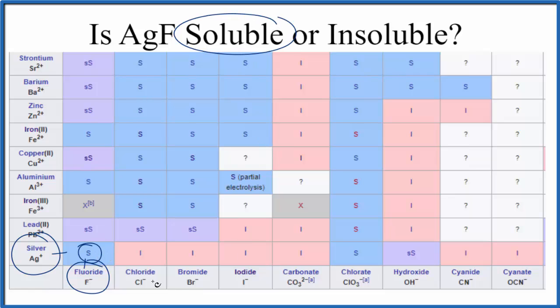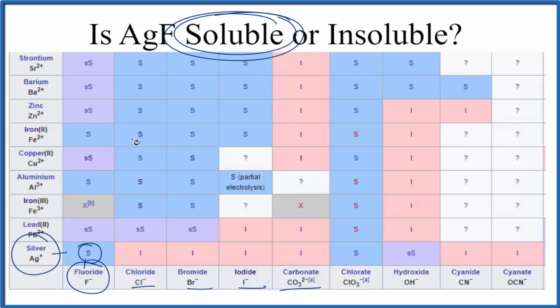Do note that AgCl, AgBr, AgI, Ag2CO3 — many of these silver compounds are insoluble. But AgF, that's soluble in water.